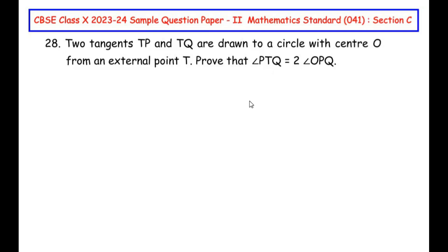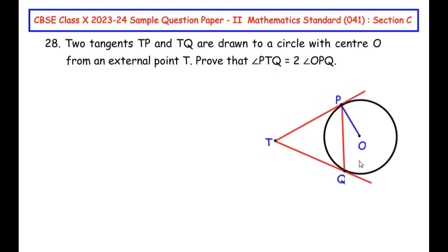Let us try to understand this question by drawing a rough figure first. I have drawn a circle with center O, and there is an external point T through which two tangents TP and TQ are drawn, touching the circle at points P and Q. We have to prove that angle PTQ, which is this angle, is equal to 2 times angle OPQ, that is this small angle.